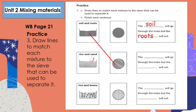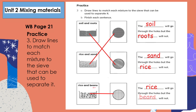Look at this picture. The sand will go through the holes but the rice will not, because the sand particles are smaller than the rice so they will be able to go through the holes. The grains of rice are much bigger and will get caught in the holes. The rice will go through the holes but the beans will not. The grains of rice are smaller than the beans so they will be able to go through the holes. The beans are much bigger and will get caught in the holes.